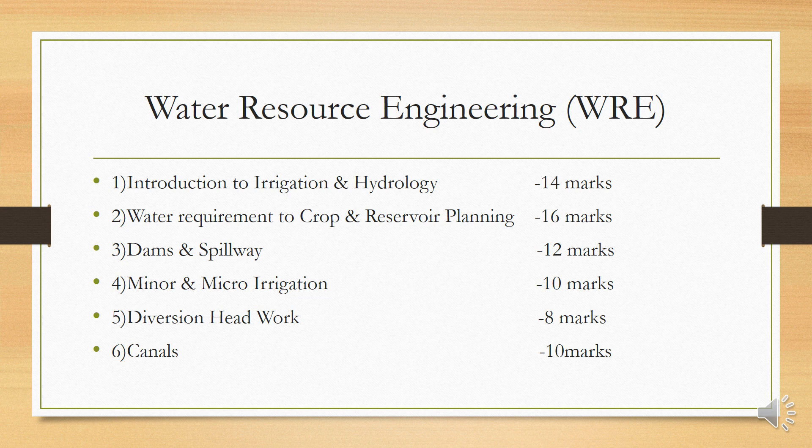The second chapter is for 16 marks. The third chapter is also for 16 marks and covers Dam and Spillway. In this chapter, you have types of dams, the advantages of some dams, then spillway and types of spillway. The third chapter is for 12 marks.